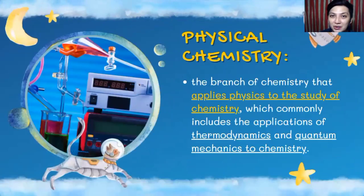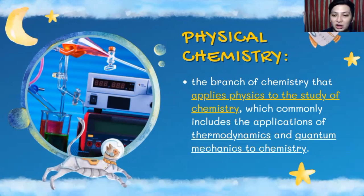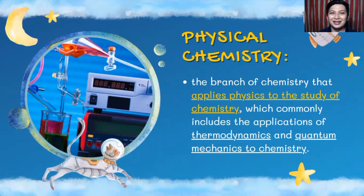We also have physical chemistry. This is the branch of chemistry that applies physics to the study of chemistry — it is the interaction between chemistry and physics at the same time, which commonly includes the applications of thermodynamics and quantum mechanics to chemistry, and can also be included in engineering.